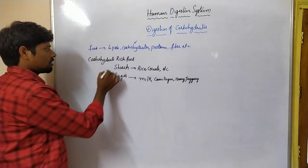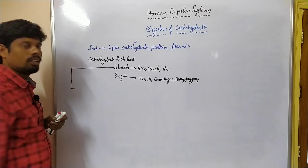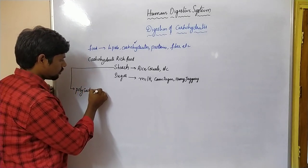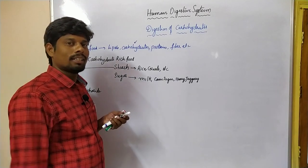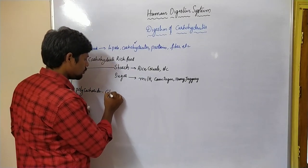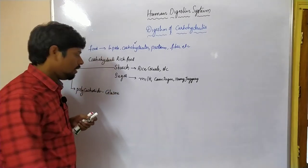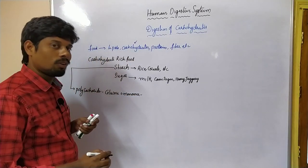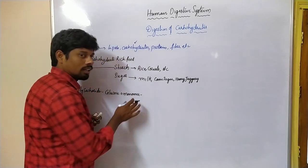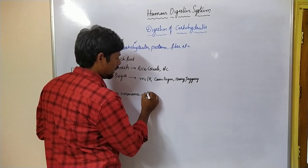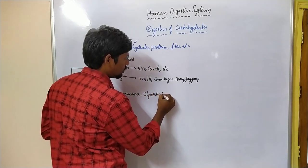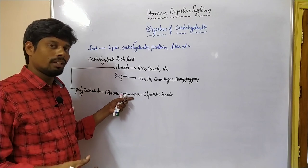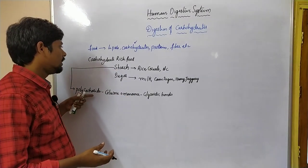Starch is a polysaccharide of glucose — it means many monomers of glucose. Many monomers of glucose combine together to form a polymer through bonds called glycosidic bonds. Through glycosidic bonds, many monomers together form the polysaccharide that is called starch.